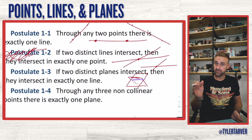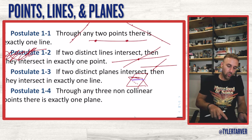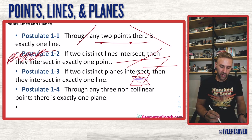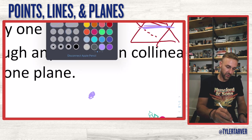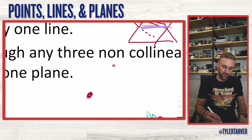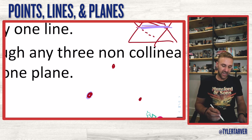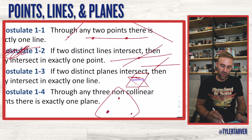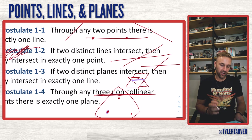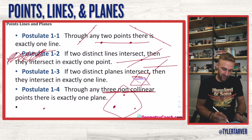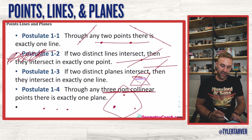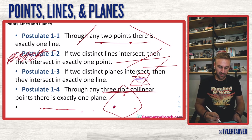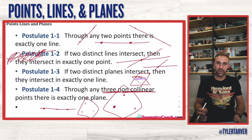Postulate 1-4: through any three non-collinear points, there is exactly one plane. Anytime you have three coordinates, you can make a plane. The key word is non-collinear — you can't use three points that are all on the same line. You need at least three points where one of them is somewhere else, and then you can have a plane.